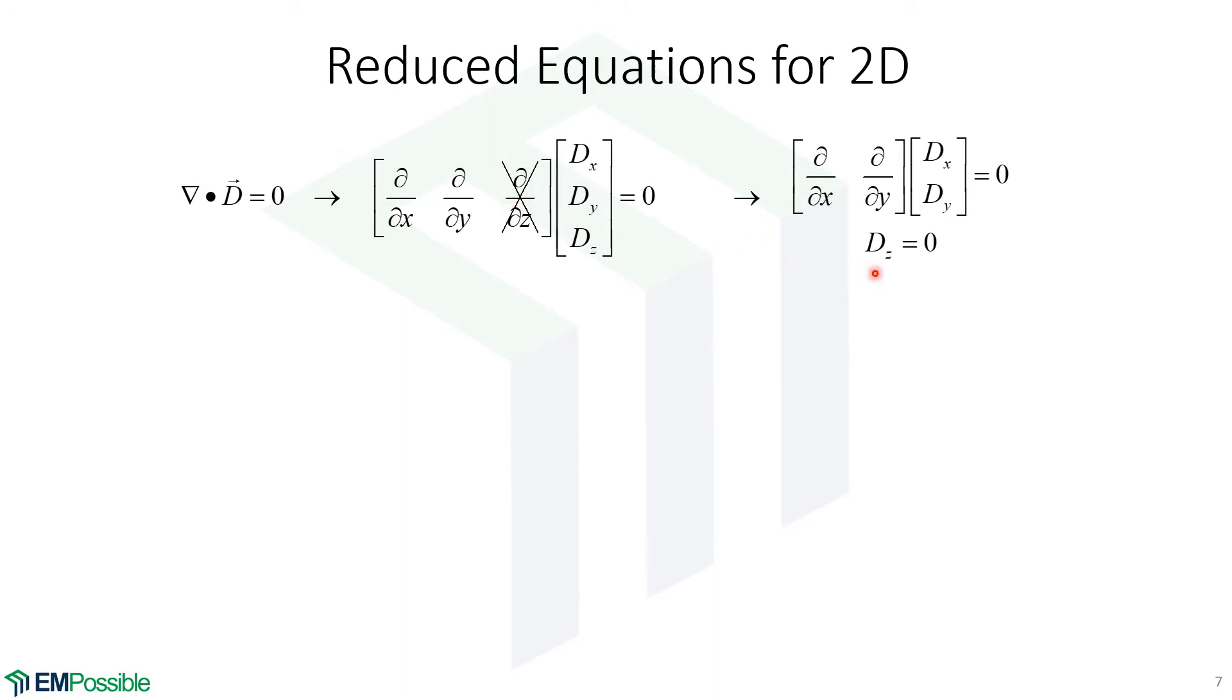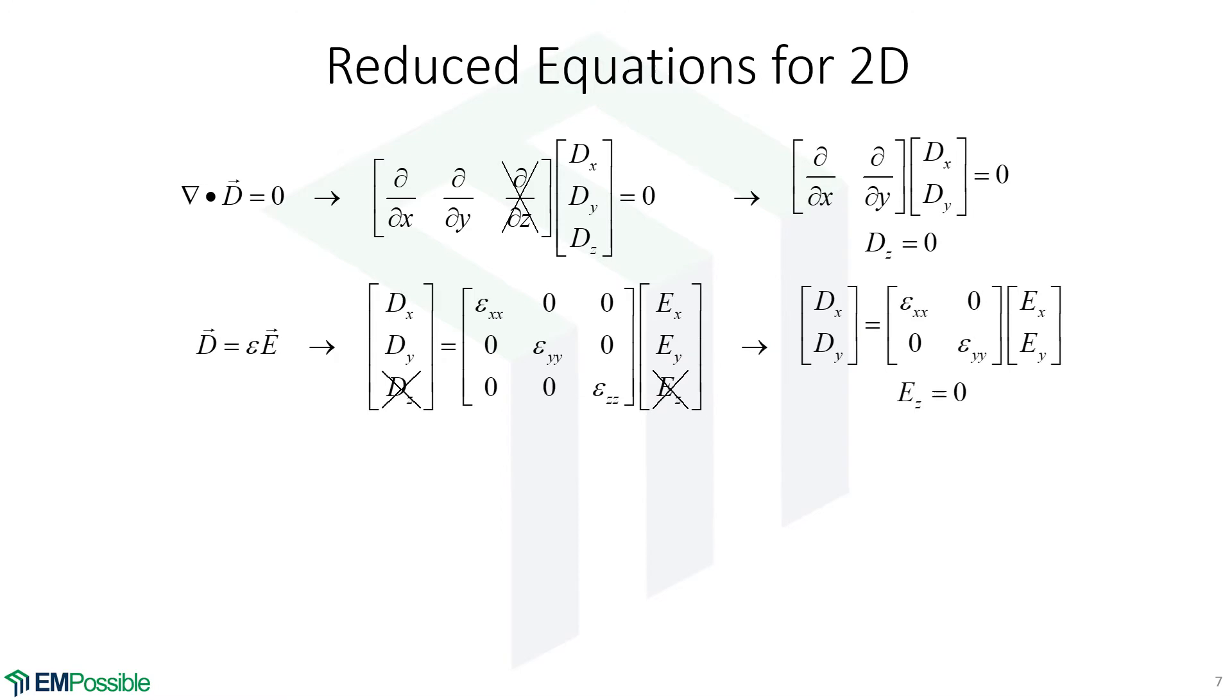We had our divergence equation, and now we know that the Z derivative is zero, so that drops out. That also lets us set the Z component of D equal to zero. Our analysis will only have a Dx and Dy component. There will be no Z component to D. We have our constitutive relation. Since the Z component of D is zero, that makes the Z component of E equal to zero. In fact, the fields don't even feel epsilon ZZ.